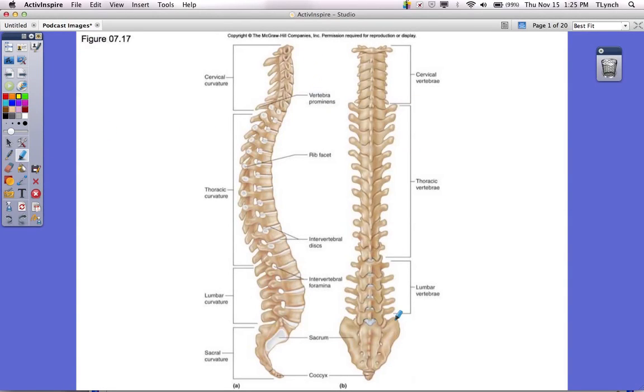We're looking at the vertebral column here, and you should have labeled the cervical vertebrae, the thoracic vertebrae, the lumbar vertebrae, the sacrum, and the coccyx, the intervertebral foramina, and also the intervertebral disc.